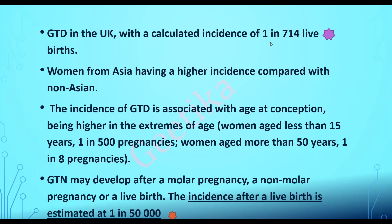The incidence of gestational trophoblastic disease in the UK is one in 714 — another important exam question. Asian females have a higher tendency to have gestational trophoblastic diseases, and extremes of age — less than 15 years or more than 50 years — are at higher risk. GTN can arise after any pregnancy event: after abortions, molar pregnancies, or live births. The incidence of GTN occurring after a live birth is one in 50,000.